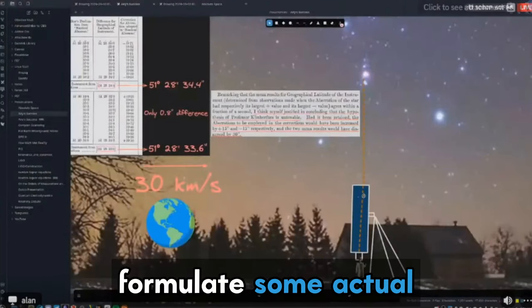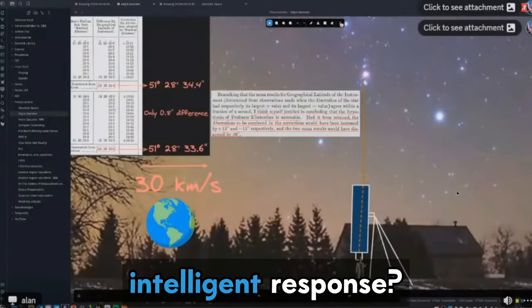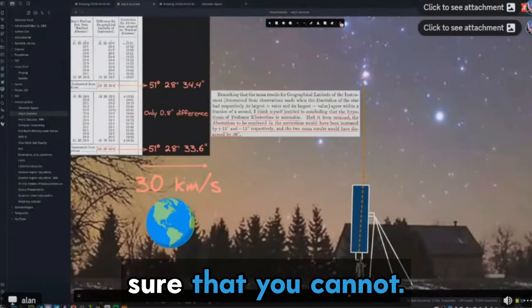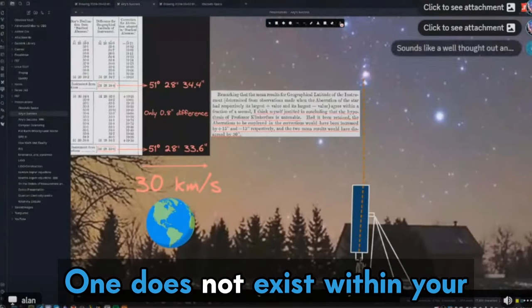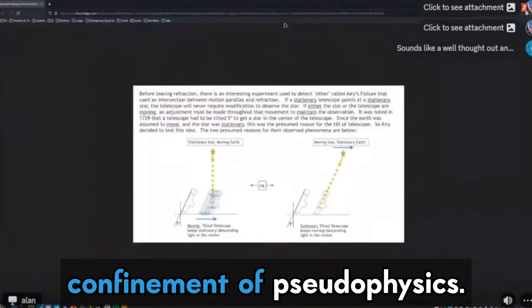So this is a major conundrum and that's why they just called it a failure and people just now just say he was trying to prove ether and couldn't. That's not what happened. So can you guys formulate some actual intelligent response? Because we're pretty sure that you cannot. One does not exist within your confinement of pseudophysics.